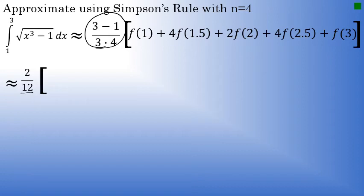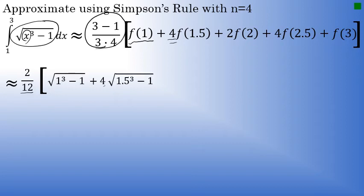Times the quantity of f of 1 here, that's going to be substituting a 1 into the expression, the square root of x to the third minus 1, plus 4, don't forget about the coefficients, 4 times the square root of 1.5 to the third minus 1. And then our coefficient will be a 2 when we evaluate f of 2. It's the square root of 2 to the third minus 1.